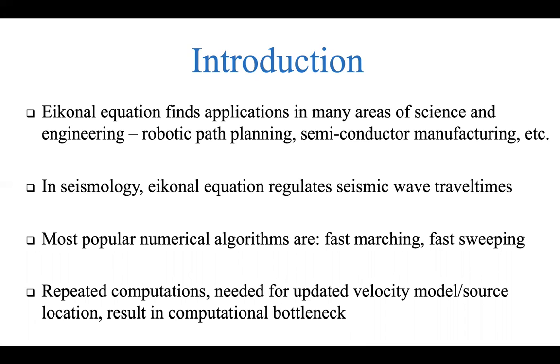The most popular algorithms to solve the Eikonal equation numerically are the fast marching method and the fast sweeping method. The problem with these methods is that there is no transfer of information between one instance of solution and the other. For example, if you're solving for a particular velocity model and have an updated velocity model, you need to do the same amount of computation. Likewise, if you have different source positions. Therefore, these methods may result in computational bottleneck when repeated computations are needed, for instance in the case of structure inversion or location inversion. We look at machine learning literature to see if we could benefit from the advances in machine learning to solve this issue.